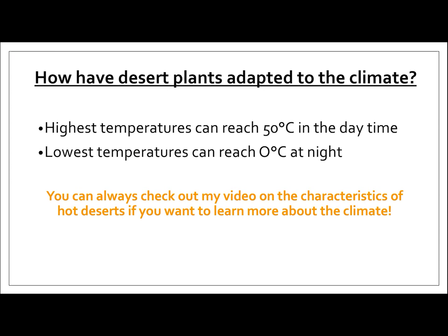So just a quick recap — if we're going to be talking about adaptations, we need to make sure that we know what the temperature is in the desert. The highest temperature can reach 50 degrees, which is extremely hot in the daytime. But at nighttime, the lowest temperatures can be below freezing, so below zero degrees, which makes it incredibly cold. These temperatures, combined with low amounts of rainfall, mean that it can be really difficult for plants to survive in these harsh conditions. So they need to adapt — they need to change to suit the climate.